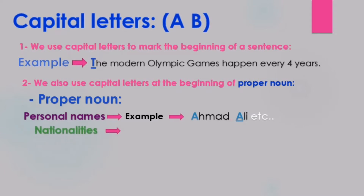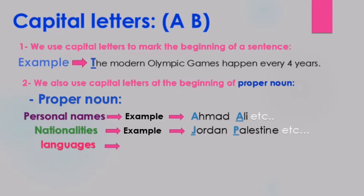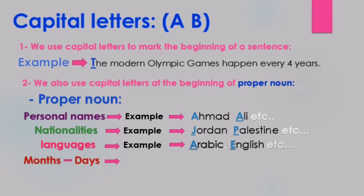Number two: nationalities — الجنسيات — for example: Jordan, Palestine, etc. Number three: languages — اللغات — for example: Arabic, English, etc.